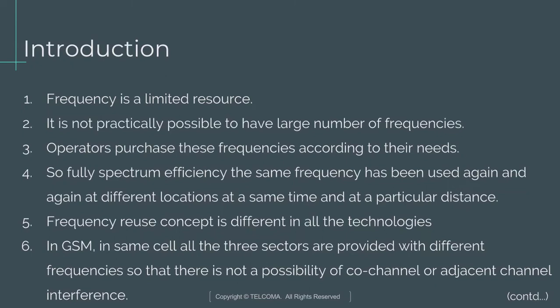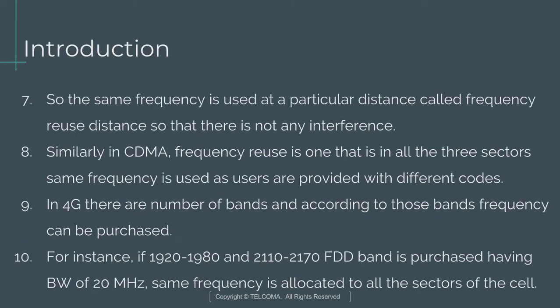In GSM, in the same cell all three sectors are provided with different frequencies so that there is no possibility of co-channel or adjacent channel interference. The same frequency is used at a particular distance called the frequency reuse distance. In CDMA, frequency reuse is one — all three sectors use the same frequency — as users are provided with different codes. In 4G, there are a number of bands, and frequencies can be purchased accordingly. For instance, 1920 to 1980 MHz and 2110 to 2170 MHz FDD band can be purchased with a bandwidth of 20 MHz, and the same frequency is allocated to all sectors of the cell.